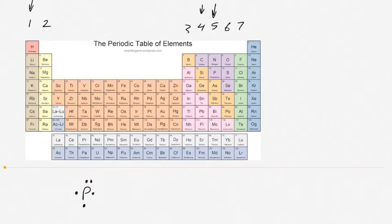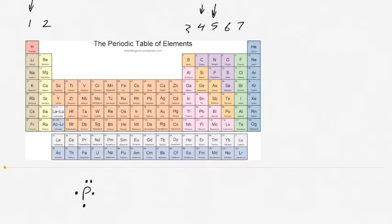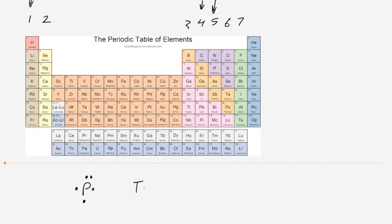If you were to write the symbol for something in the D block, something like titanium, you would write it in a similar fashion. You write the symbol and then you write the number of valence electrons. Titanium is in the fourth row, so it has n equals 4 for its valence electrons. It would have a 4s2, 3d2 configuration.